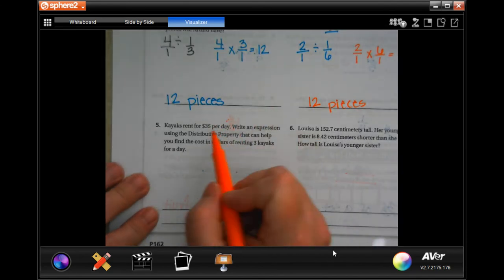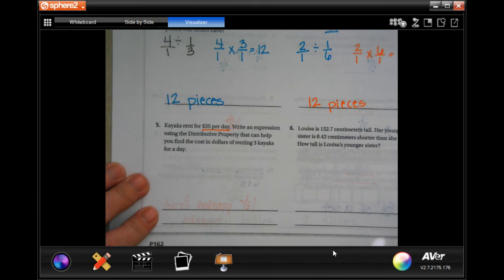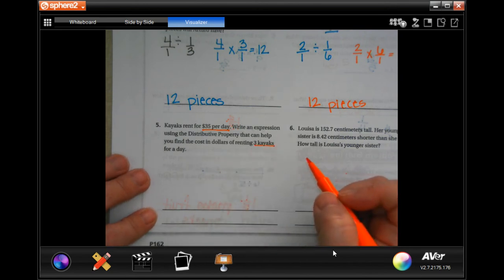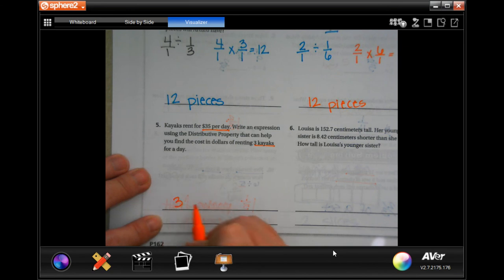Kayaks rent for thirty-five dollars a day. Write an expression using the distributive property that can help find the cost in dollars of renting three kayaks for a day. Well, that would just be three times thirty-five.